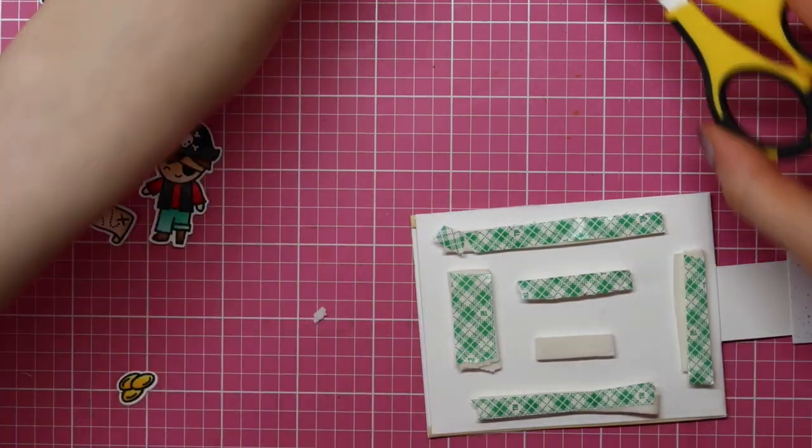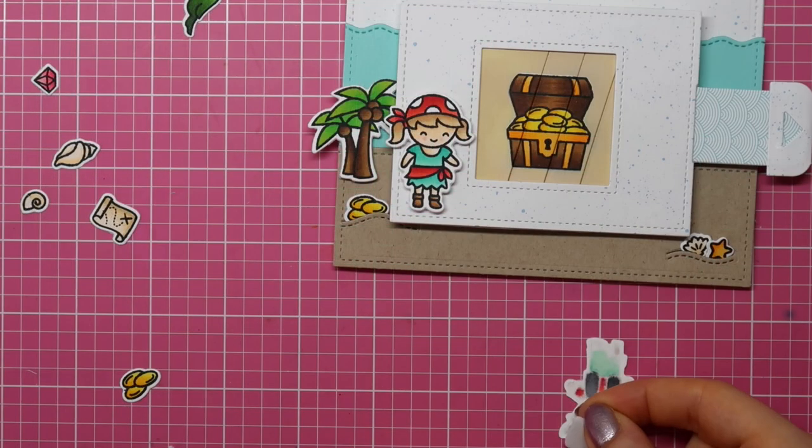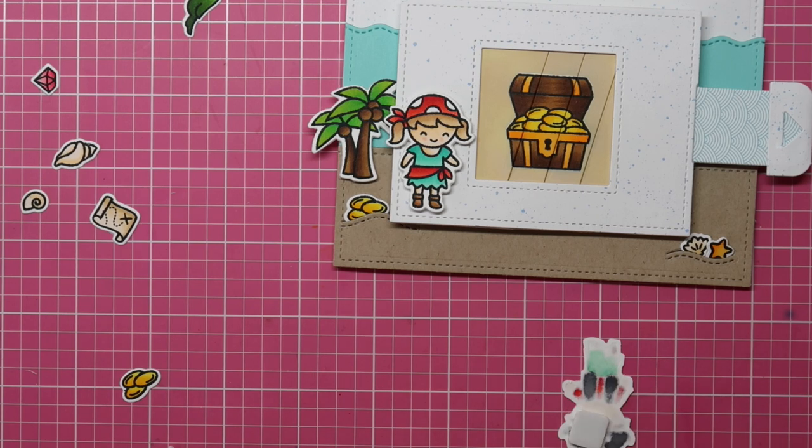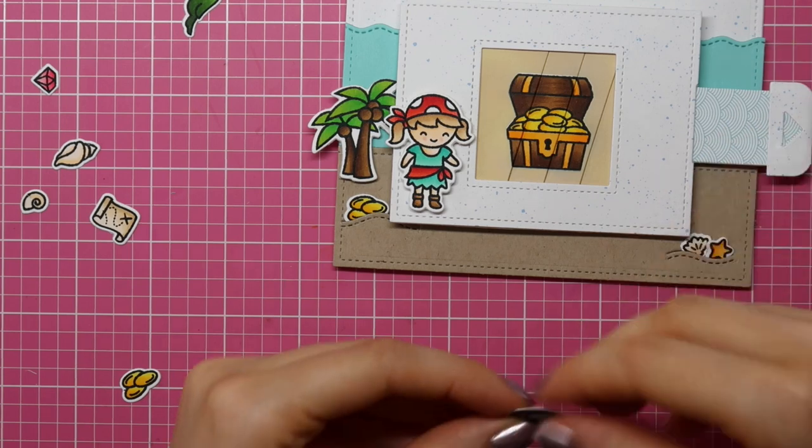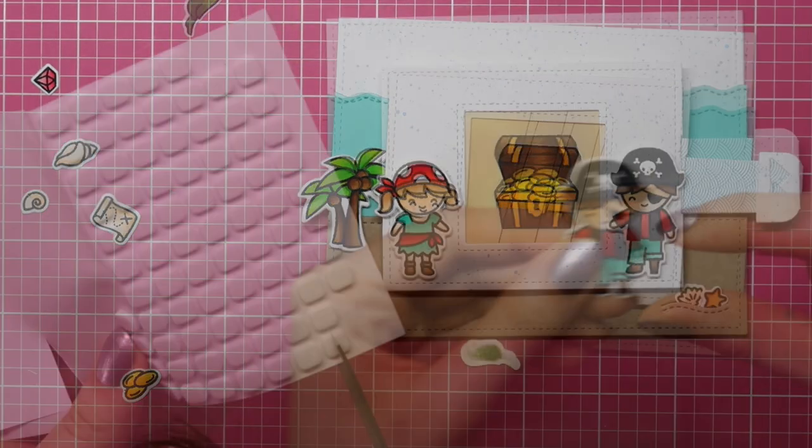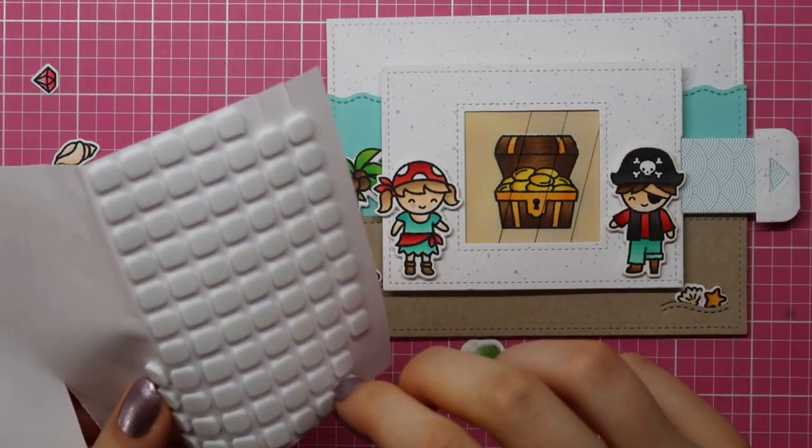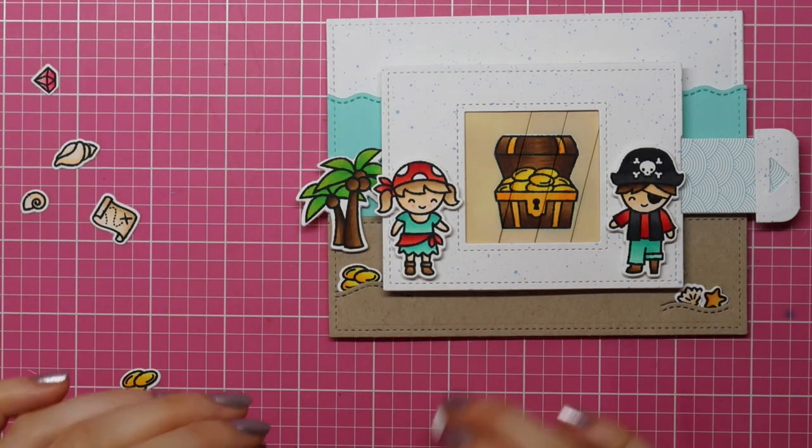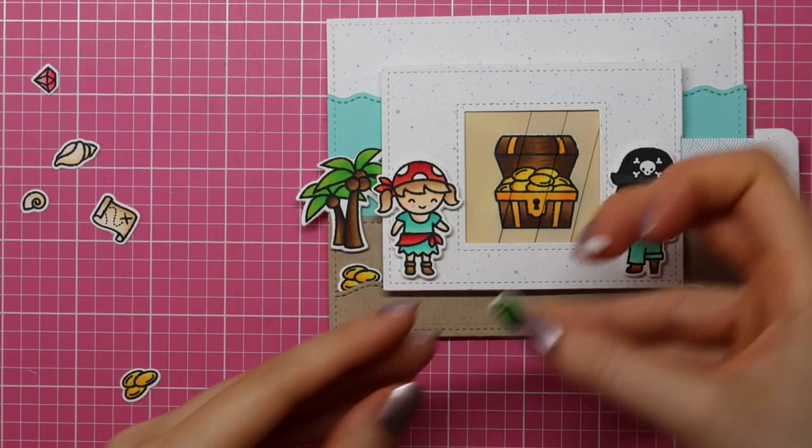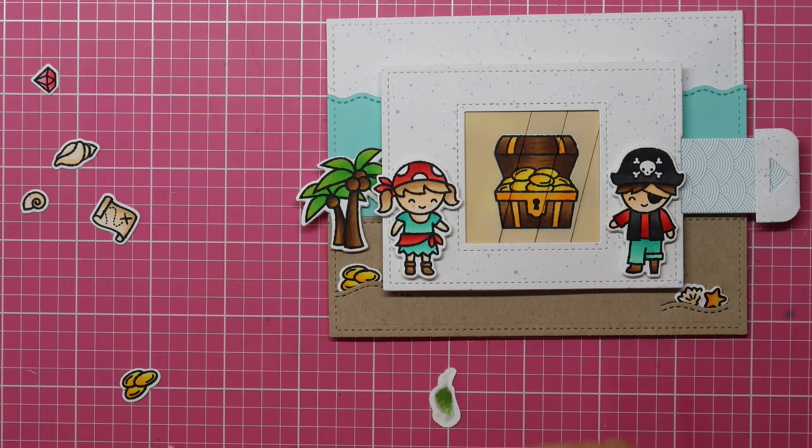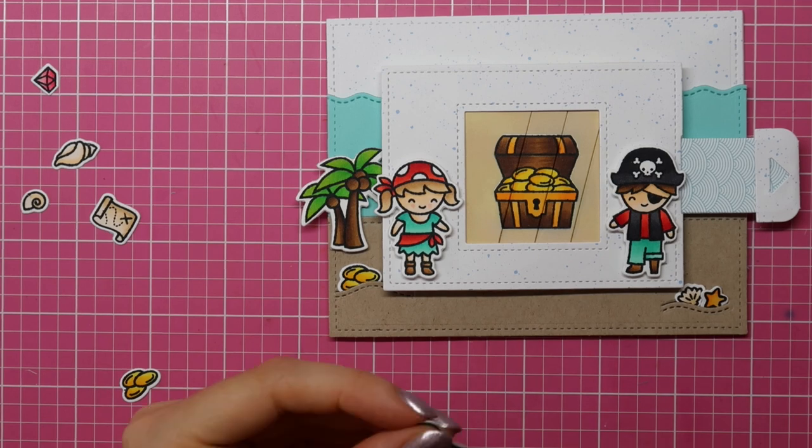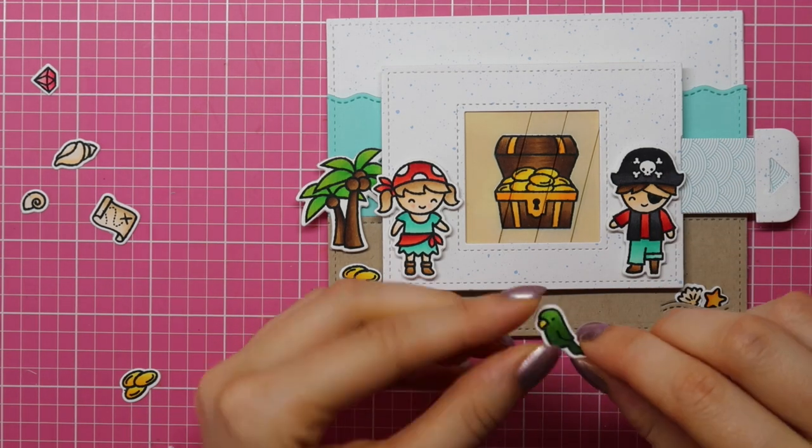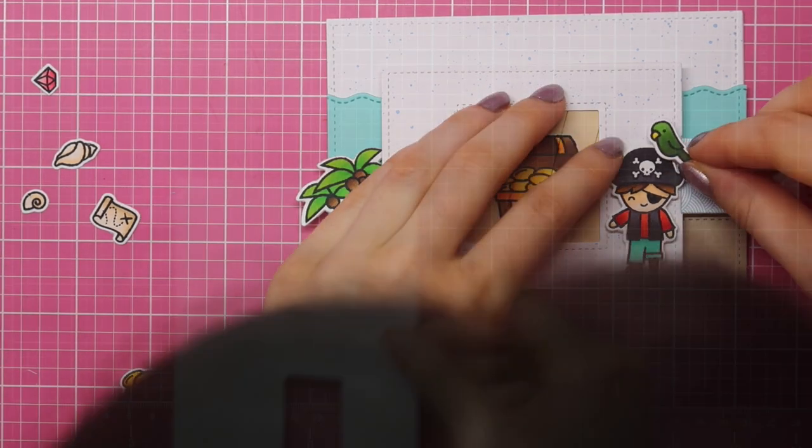To adhere my magic picture changer to my standard size note card, I doubled up the foam tape from Scotch. I am using some foam squares to adhere my little pirate and to adhere that little bird. As you can see, I like to trim down foam squares to make them match my images perfectly. It's just a little something that you can do to make card making a lot easier.